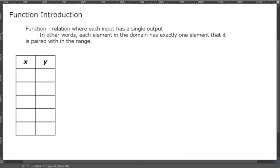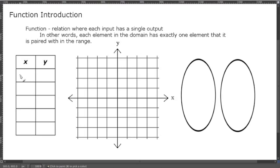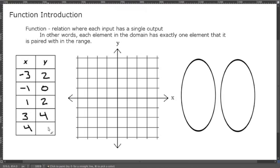Let's look at a few examples. The relation: (-3, 2), (-1, 0), (1, 2), (3, 4), and (4, 1). Graphing these, it would look something like this: negative three, two; negative one, zero; one, two; three, four; and four, one.